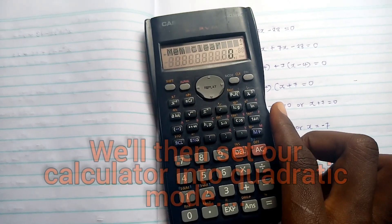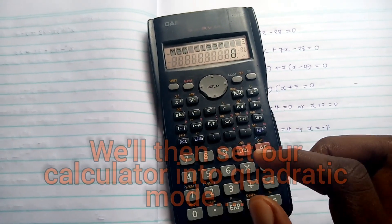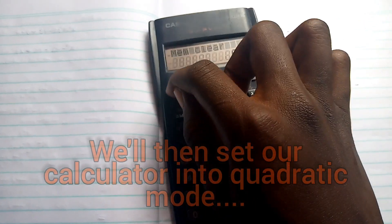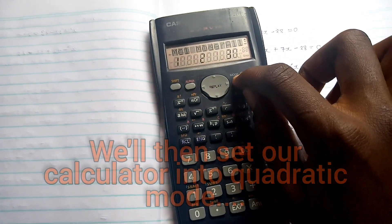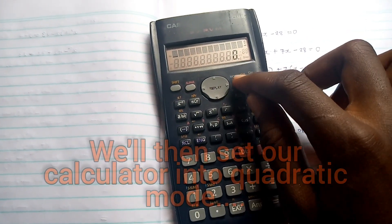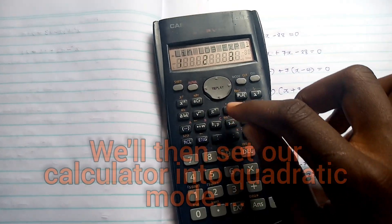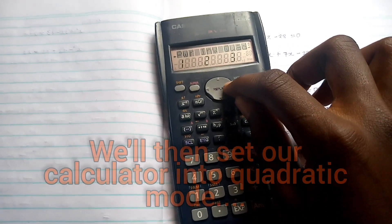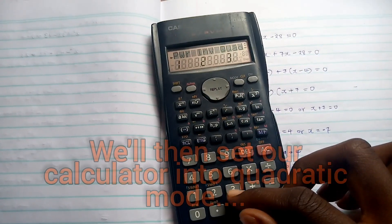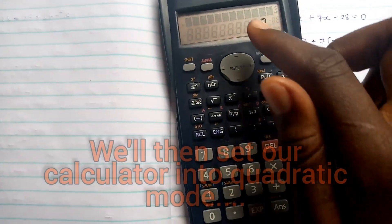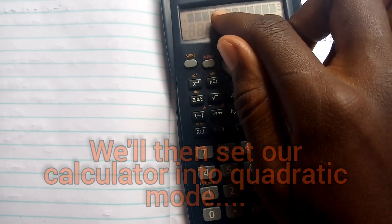we'll now set it into quadratic mode by simply pressing Shift, Mod, 3, Right Key, again 3, and as you can see, it's written here.